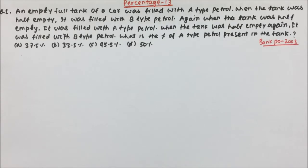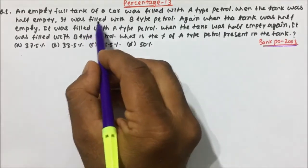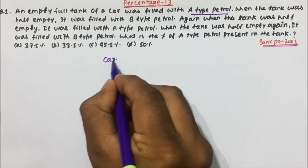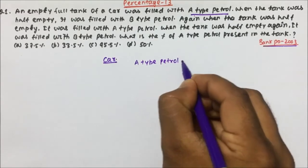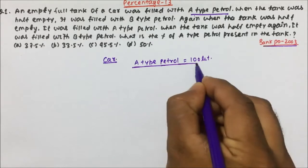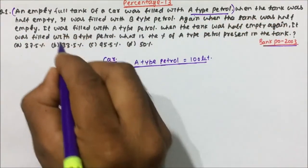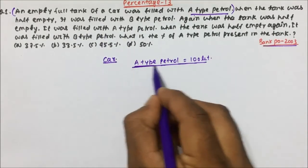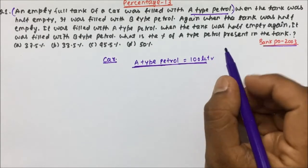Today's question is very important and has already been asked in Bank PO 2003. An empty full tank of a car was filled with A-type petrol. Suppose the capacity of the tank is 100 litres, so the car is filled with 100 litres of A-type petrol.